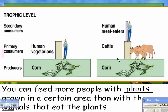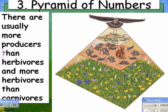You can feed more people with plants grown in a certain area than with animals that eat those plants. For example, if you have corn and feed it directly to people, you can feed more people. But if you feed the corn to cows first and then people eat the cows, you can feed far fewer people. So on a planet with a large population, it's more efficient if people eat lower on the food chain.